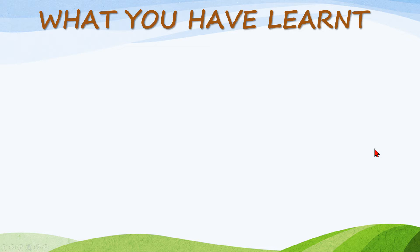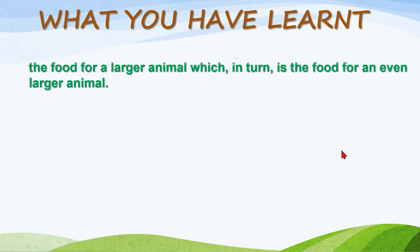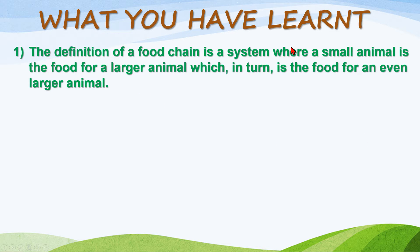Now, what you have learned — these are very important notes. The definition of a food chain is: a system where a small animal is the food for a larger animal, which in turn is the food for an even larger animal. In short: in the food chain system, a small animal is eaten by a larger animal, and then that larger animal is eaten by an even larger animal.